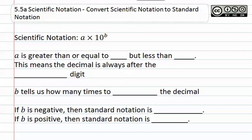5.5a Scientific Notation: Convert Scientific Notation to Standard Notation. Scientific notation is shown as a times ten to the b. We will define what a and b are. a is a number that is greater than or equal to one, but less than ten, meaning it is generally between one and ten. This means the decimal is always after the first digit.